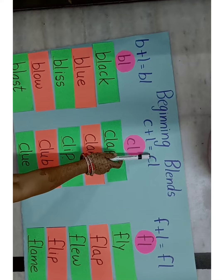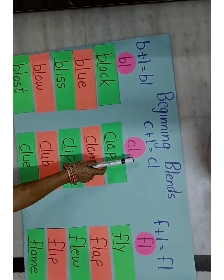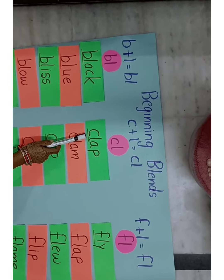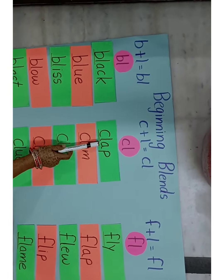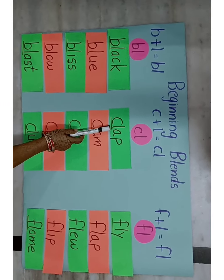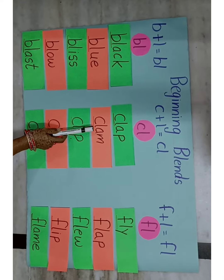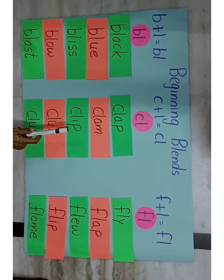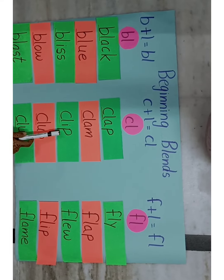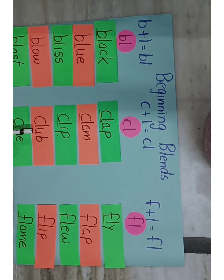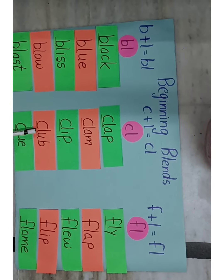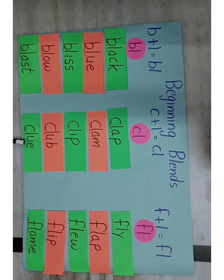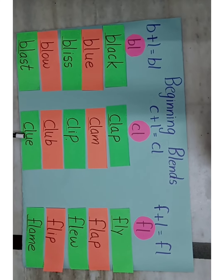C and L together make the sound CL. Here I have written: CL - ab - Clab. CL - am - Clam. CL - ip - Clip. CL - ab - Clab. CL - ue - Clue.